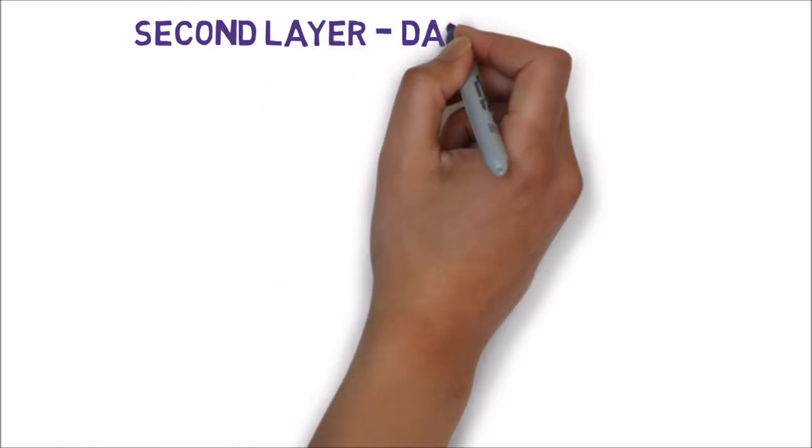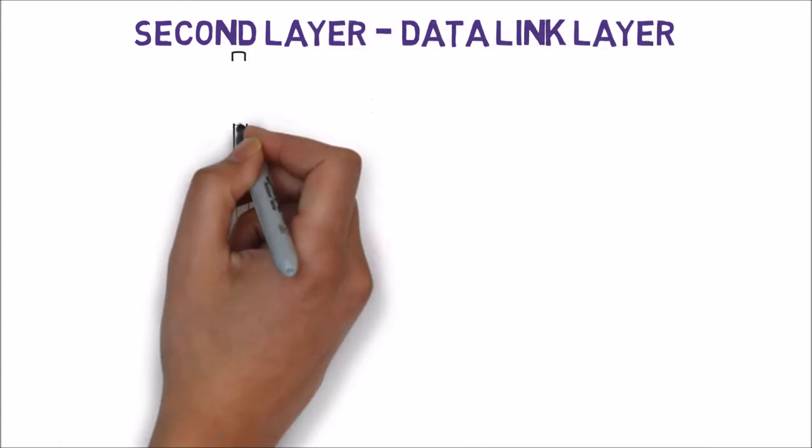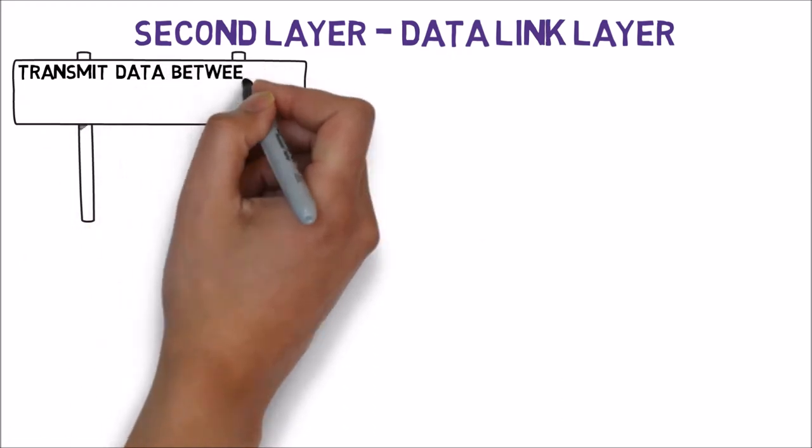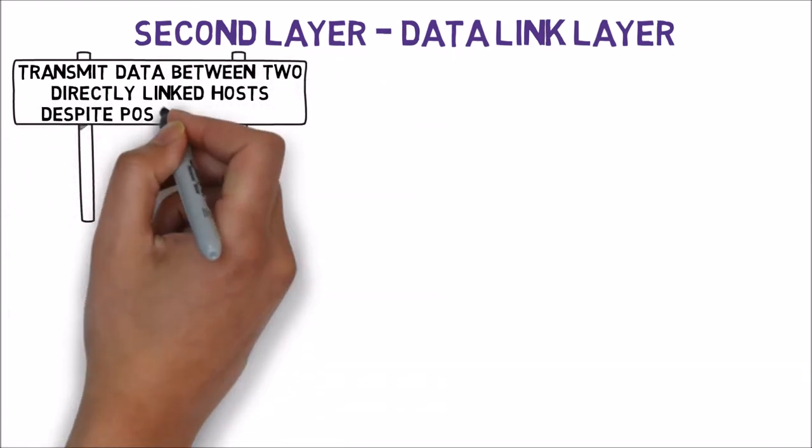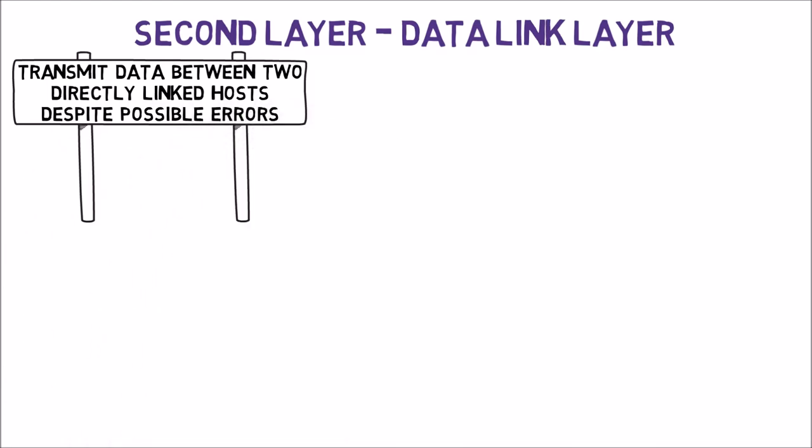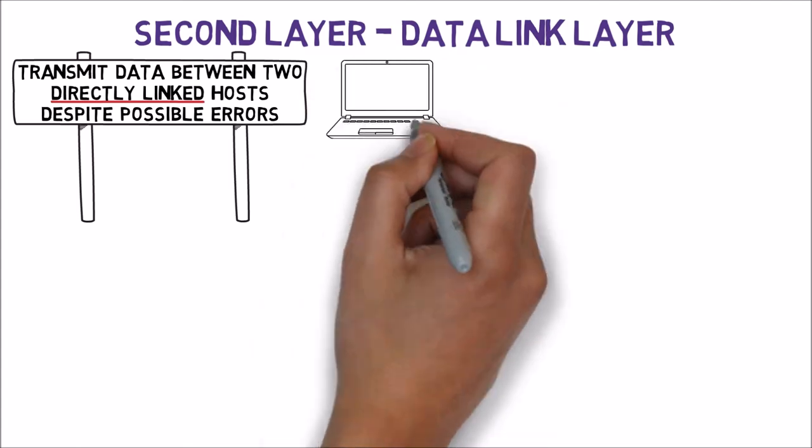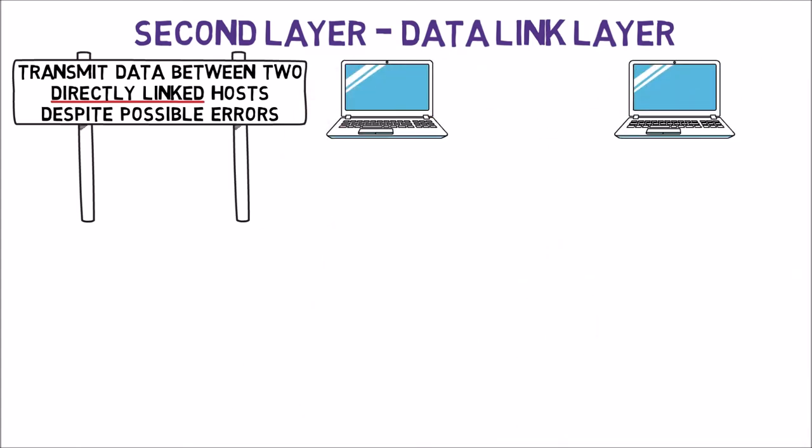The second layer is the data link layer. It is responsible for transmitting data between two hosts that are directly linked, despite possible errors. What do we mean by directly linked? For now, let us simply say that there is no device in between the two devices.